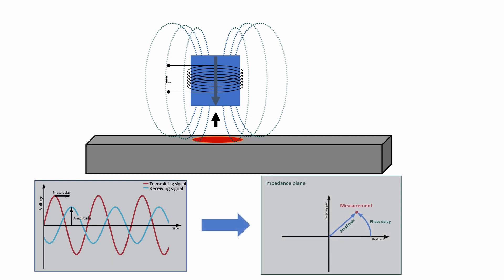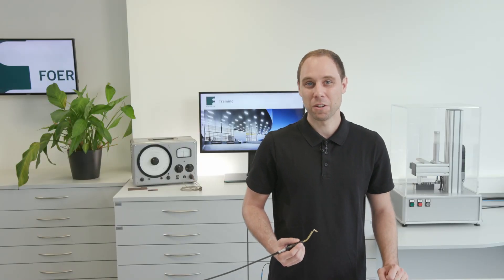From these two signals, the phase shift or the time delay from the transmitter to the receiver and the amplitude or the signal height can now be calculated. These are displayed in the so-called impedance plane.